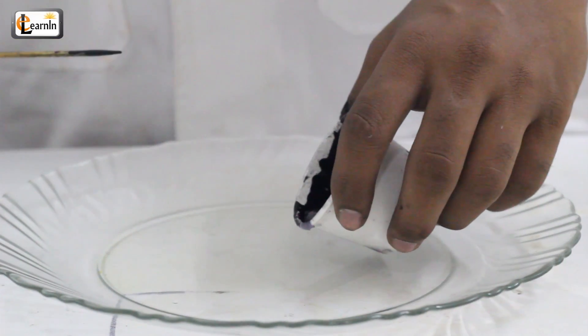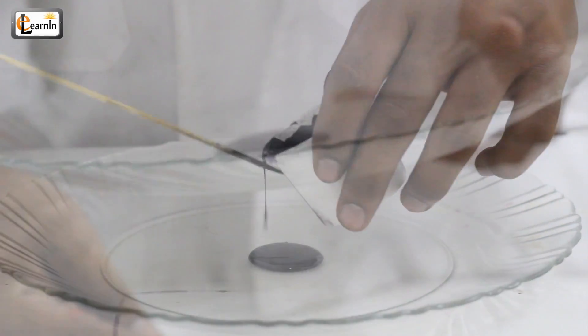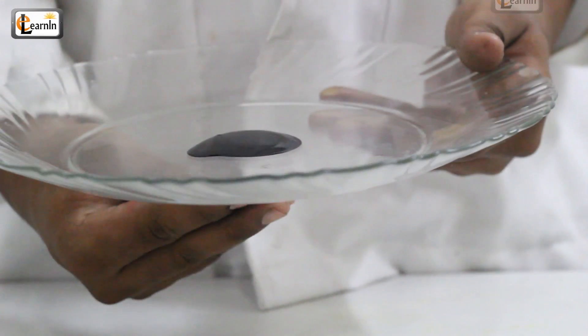Pour the fluid on any surface, like a glass plate. Place the magnet under this glass plate.